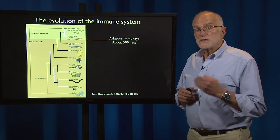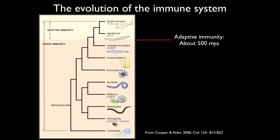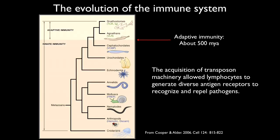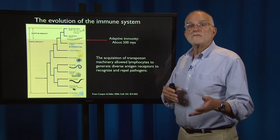The next ancient innovation with medical consequences is the evolution of the immune system. Adaptive immunity was acquired about 500 million years ago, at the transition between cephalochordates and agnathans — lampreys and hagfish. At that point, a virus inserted itself into a proto-immunoglobulin gene and brought with it transposon machinery. That is what allows lymphocytes to generate diverse antigen receptors to recognize and repel antigens. Interestingly, we got part of our ability to resist viruses from essentially a virus — a transposon.